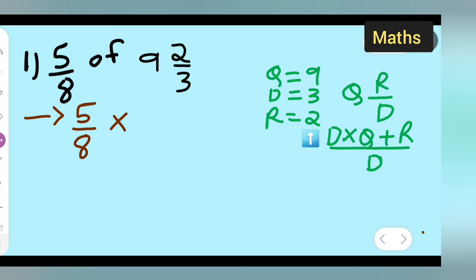Now plug the values and write the answer. D is 3 multiplied by Q which is 9, plus R which is remainder 2, upon D which is 3. You multiply this: 3×9 are 27 plus 2 equals 29 upon 3. So we're getting 29/3.